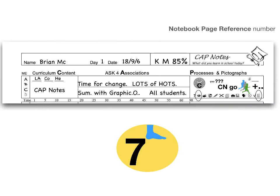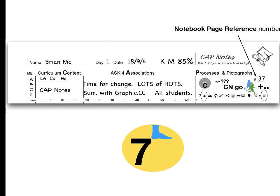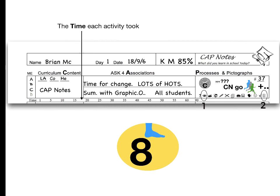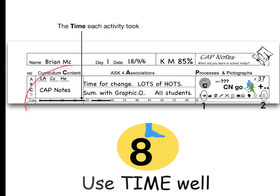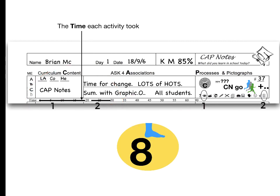Step 7: if you write in a notebook, make a notebook page reference number here. Students should number their notebook pages so it makes things easy to find. Step 8: there is a timeline for each lesson. Time and process symbols are related. Show how much time was given to each activity — number one relates to the first line, number two represents the second section.